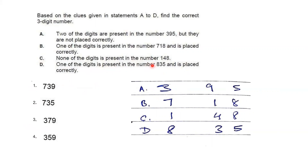Statement D says one digit from 835 is present and placed correctly. Five cannot be the digit because statement A says any digit from 395 is not placed correctly. Eight is already denied by statement C. So three is the correct digit from 835, and it is in its correct position. From the remaining analysis, the answer is 7, 3, 9.